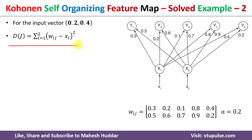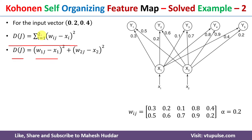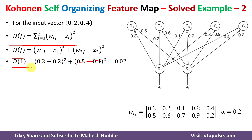Now, given this weight matrix and alpha as well as the input vector, we need to calculate the square of Euclidean distance using the equation: d_j = summation from i=1 to 2 of (w_ij minus x_i) squared. There are only two components in the input. Expanding this: d_j = (w_1j minus x_1) squared plus (w_2j minus x_2) squared. We need to put the value of j ranging from 1 to 5 since there are 5 clusters. For d1: w_11 = 0.3 minus x_1 = 0.2, and w_2j = 0.5 minus input 0.4, squared.